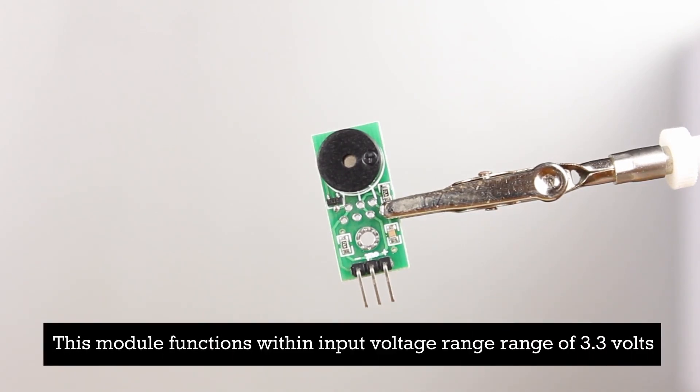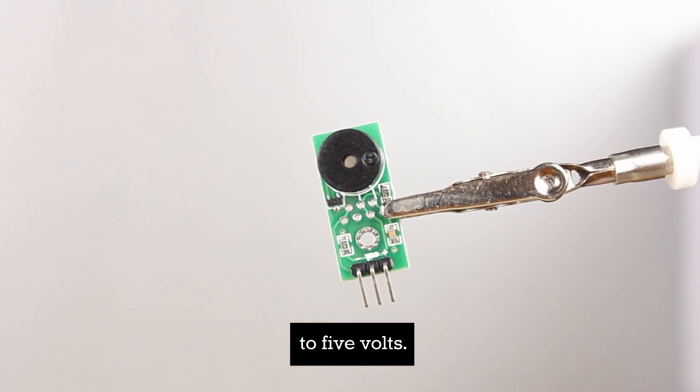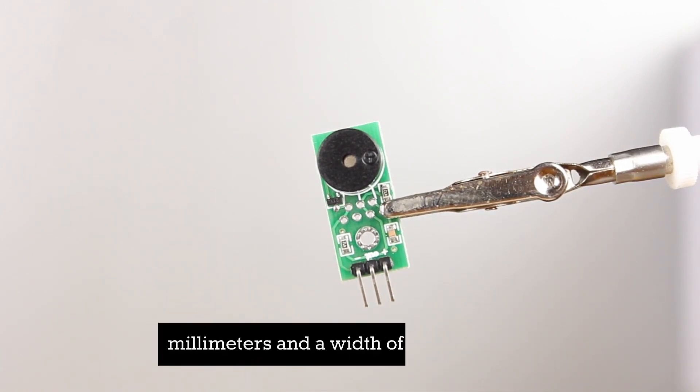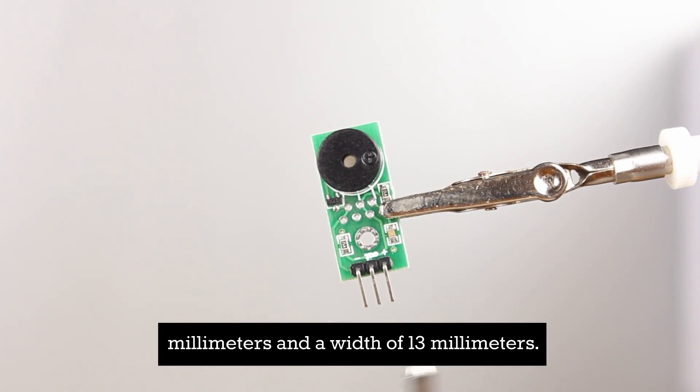This module functions with an input voltage range of 3.3 volts to 5 volts. The physical interface is comprised of a 3-pin DuPont header. The module has a length of 32 millimeters and a width of 13 millimeters.